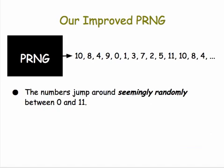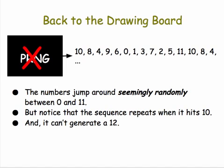Our improved PRNG is better than our original one. The numbers seem to jump around randomly between 0 and 11, but it's not very good. Notice for example that it can't generate the number 12, and that it repeats after a very short time when it hits 10. So this wouldn't be a very good PRNG.